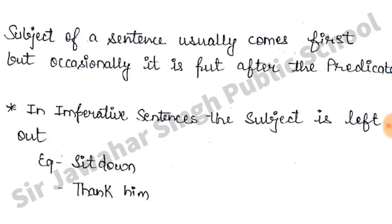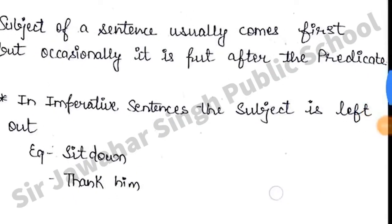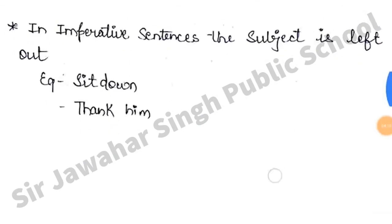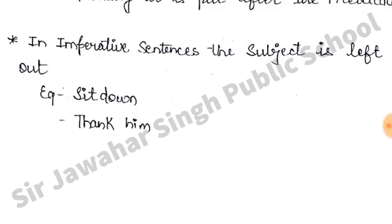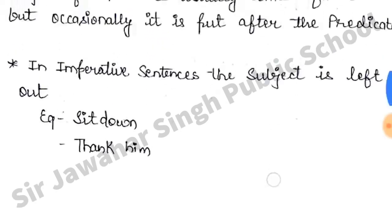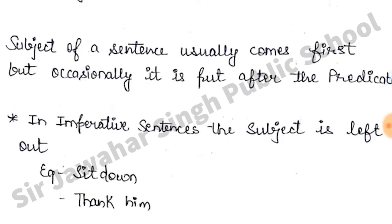The subject usually comes at the start, but sometimes it doesn't come at the start at all. These are called imperative sentences. Imperative sentences express a request, some advice or suggestion, warning, command, or order. Like 'Sit down' or 'Thank you' — these types are imperative sentences.